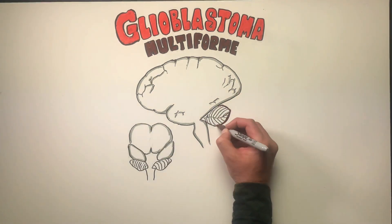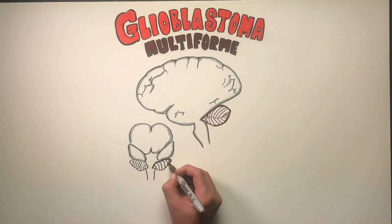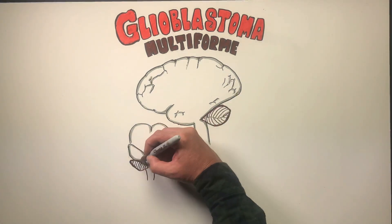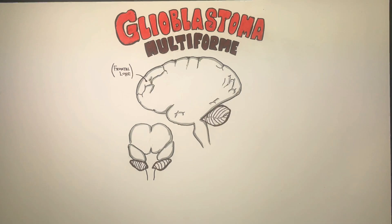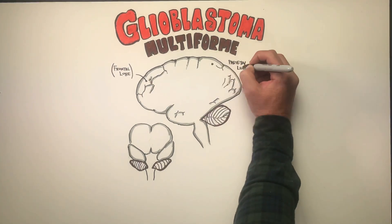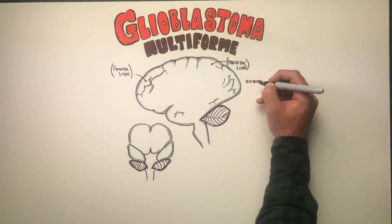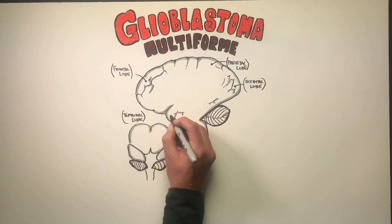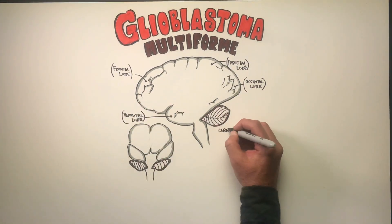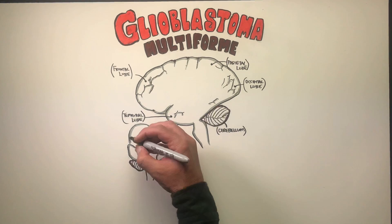Today's illustrative tutorial is on a diagnosis of glioblastoma multiforme. It is a primary brain tumor, so we're not talking about metastatic disease spreading to the brain, but a primary disease.